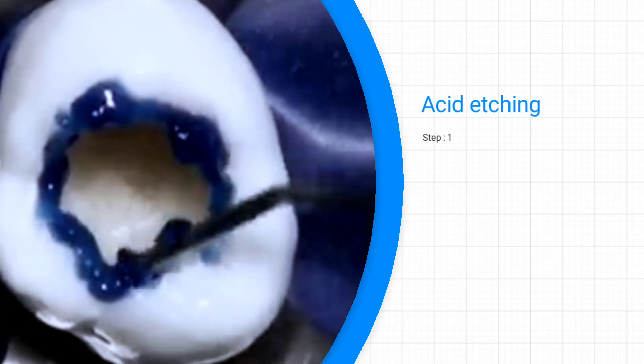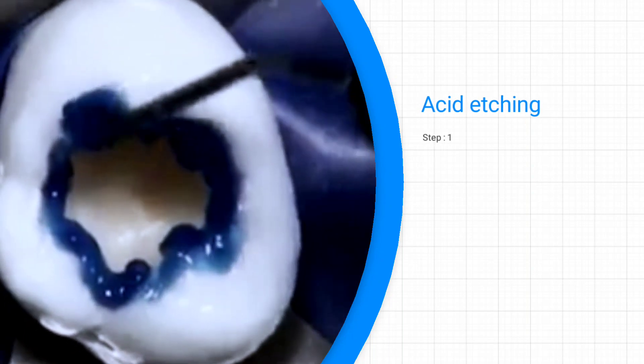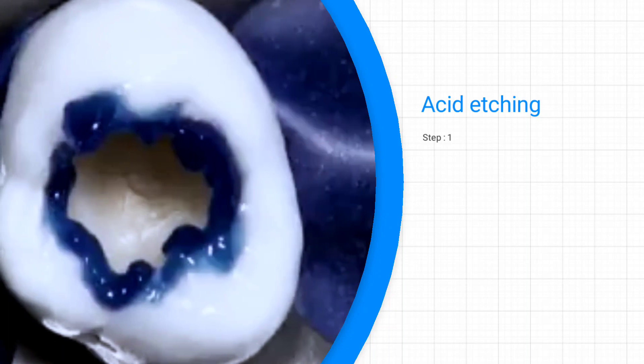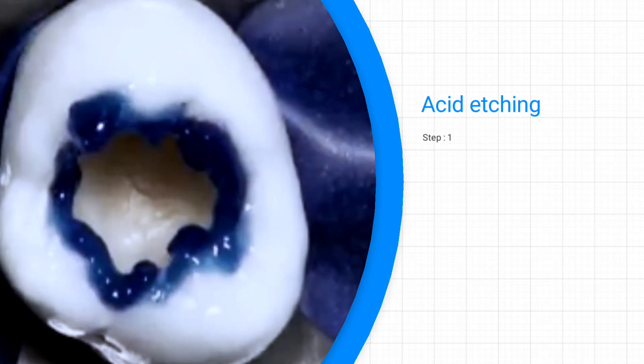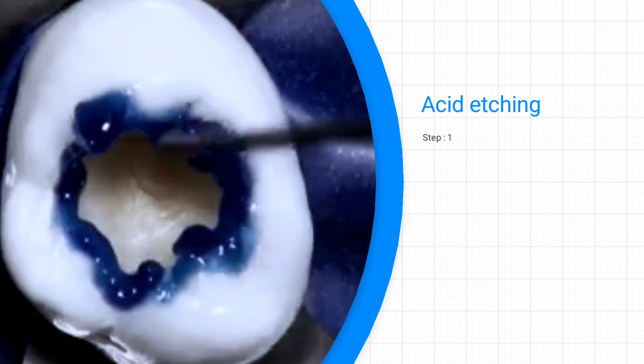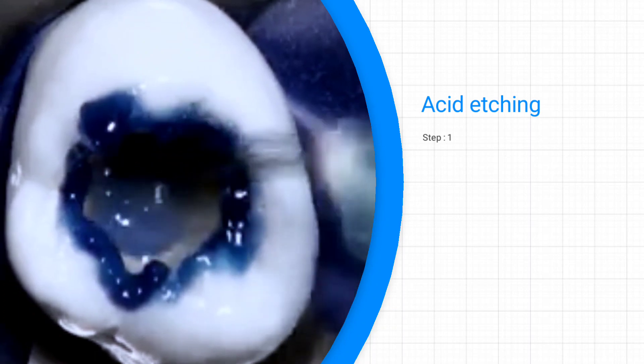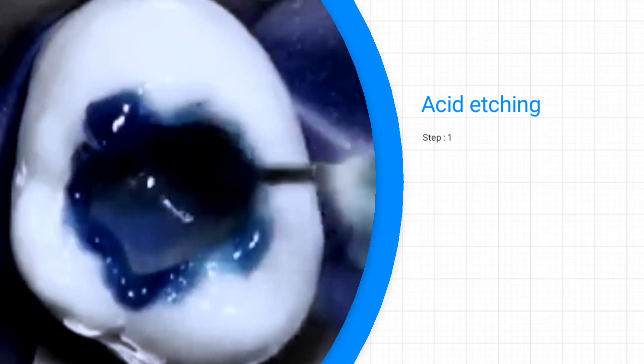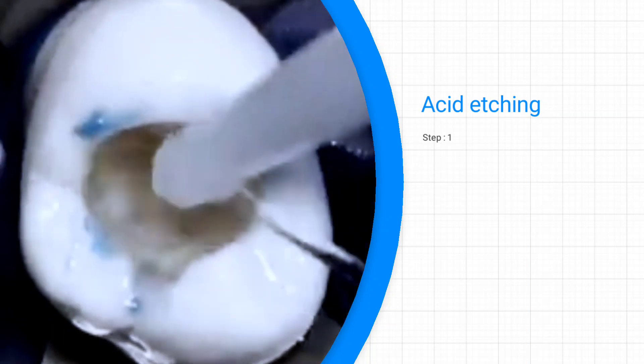Taking out the acid tooth conditioner from the kit. Tooth conditioners contain 30 to 40 percent phosphoric acid, and the conditioner needs to sit on the target area for at least 15 seconds. After that, you rinse it off, and this will make the tooth look like etched glass.